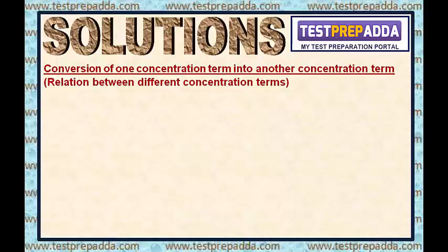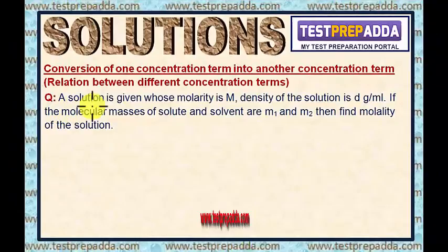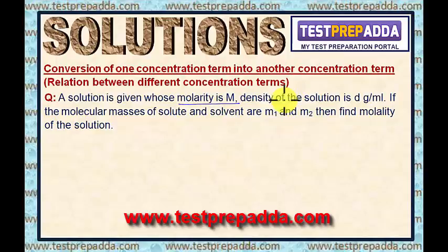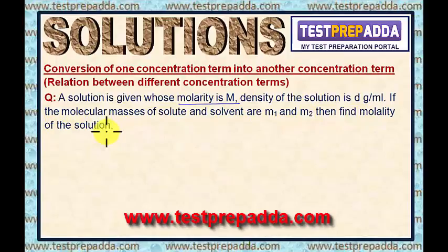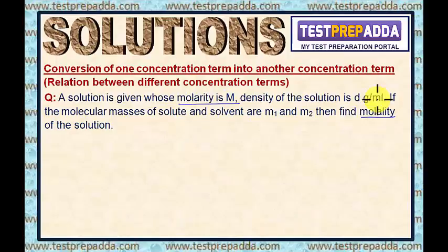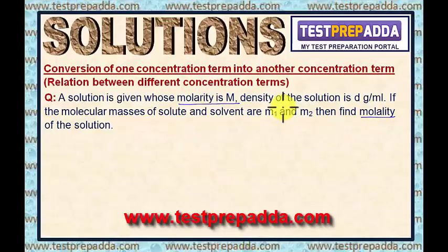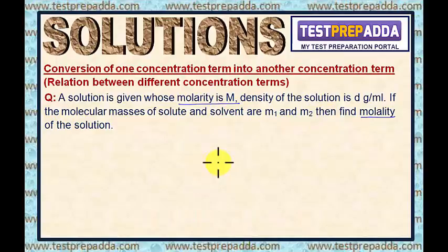But for that you need to know the basic definitions of the concentration terms. To understand this conversion method, I will take a question here. The question says: a solution is given whose molarity is capital M. Density of the solution is d gram per ml. If the molecular masses of solute and solvent are M1 and M2, then find molality of the solution. Molality is asked and molarity is given — one concentration is given, another is asked. That is why we call this a convergent type of question.